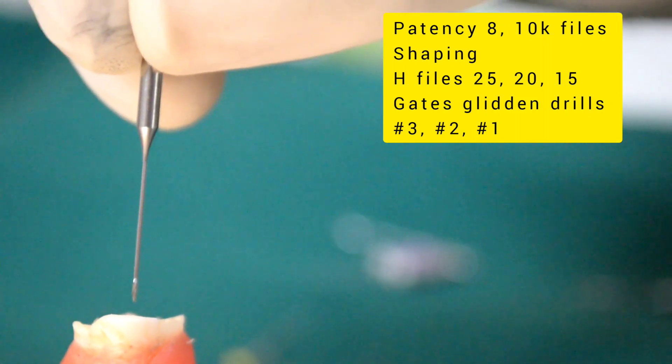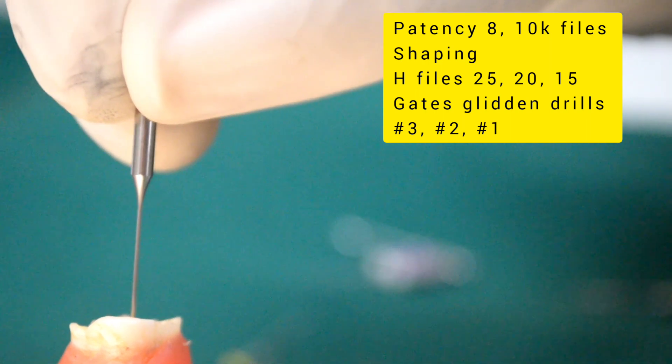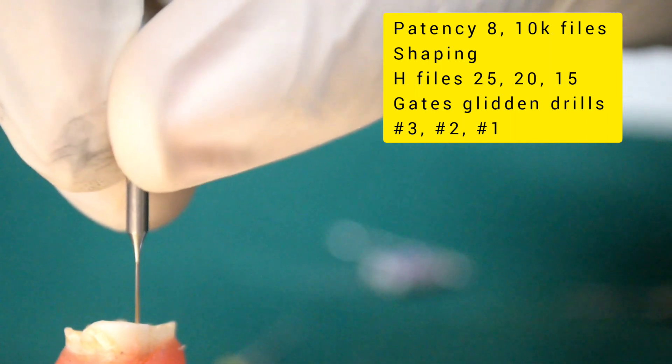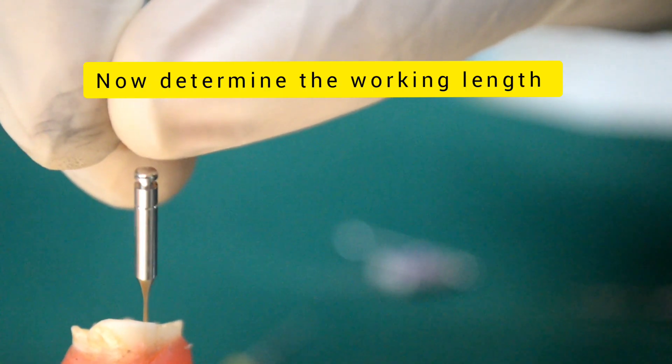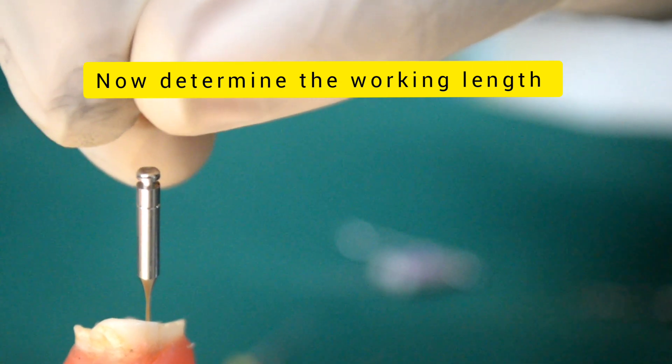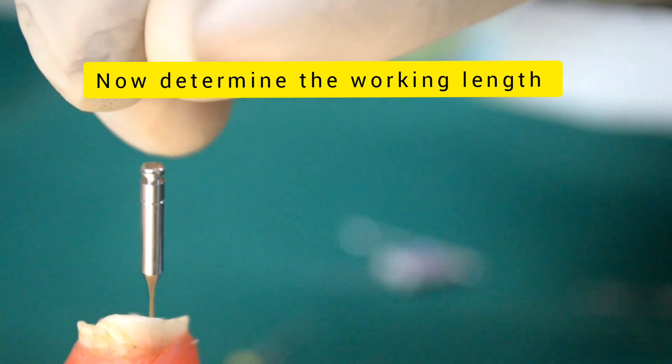Usage of GG drills from the larger size to the smaller size prevents the formation of Coke bottle appearance of the root canal. Care should be taken in directing the GG drills away from the furcation to avoid strip perforation of the root canals.